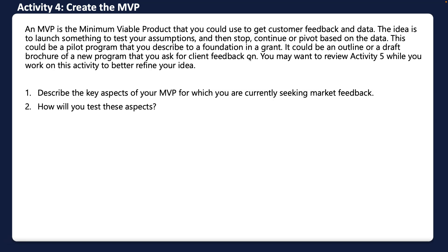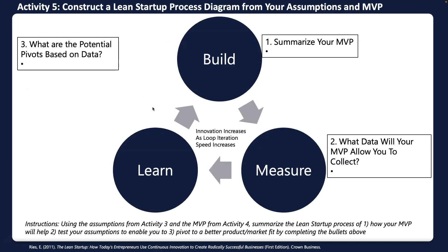In this section, the first thing you'll do is describe the key aspects of your MVP that you're going to seek market feedback on. Seeking market feedback means saying: here's my idea — my minimum viable product — and running it by your stakeholders to see what they think. Then you'll think through how you're actually going to test that assumption to see if it's true.